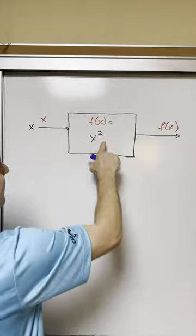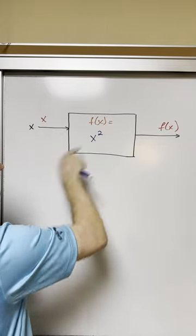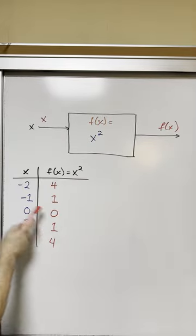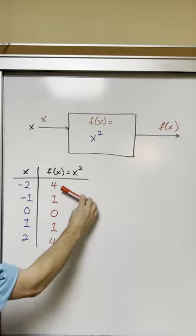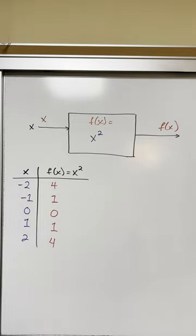We can change the function to be anything we want. In this case, f of x is equal to x squared. When we do that, if we stick in the same input values, we get different distinct output values.